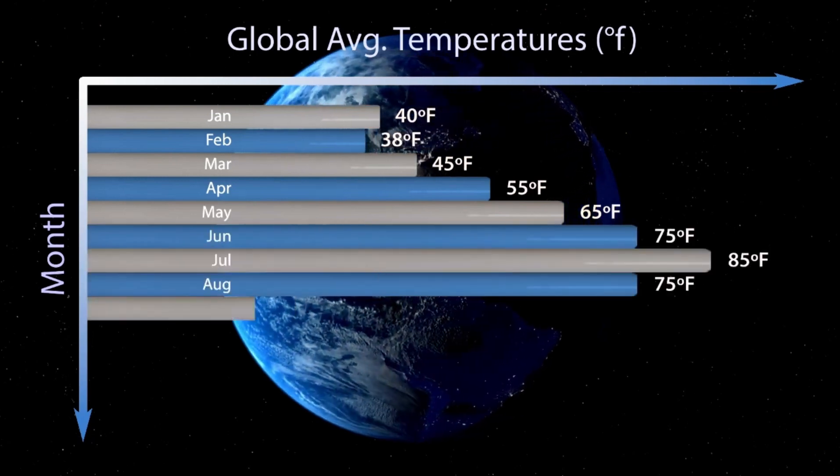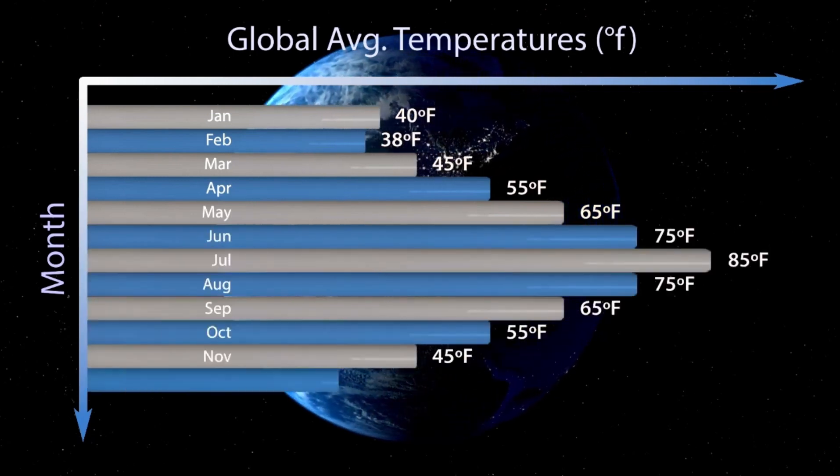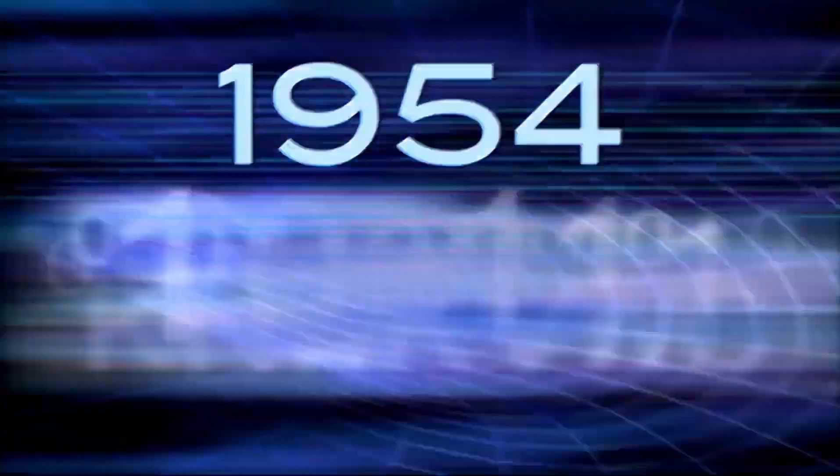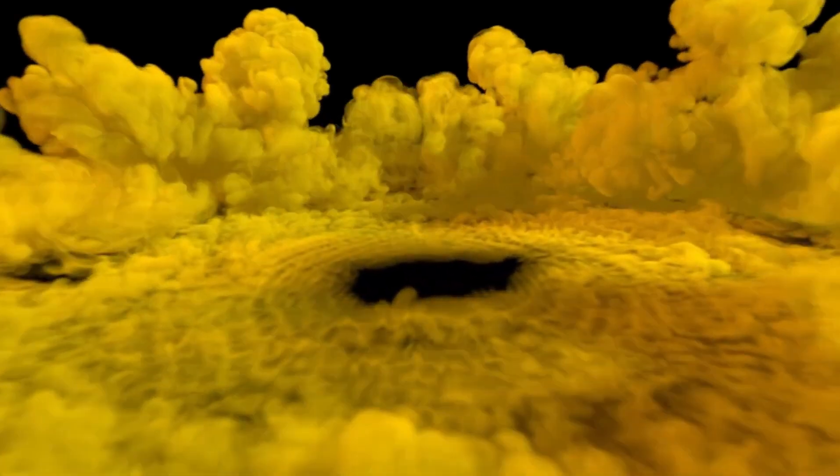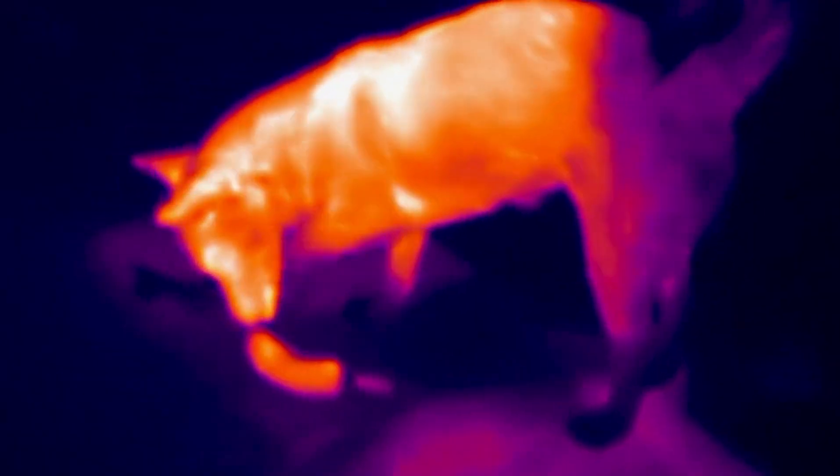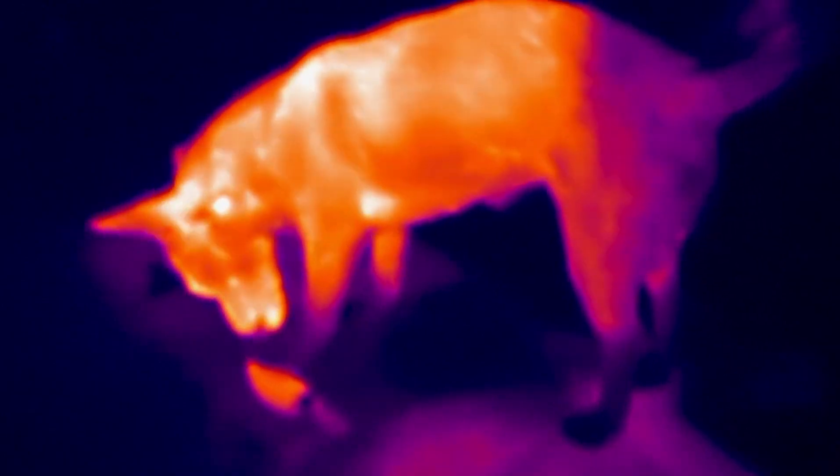New Horizons gave us our first close-up views of Pluto's surface, revealing a surprisingly dynamic and complex world. But it was the James Webb Space Telescope that allowed us to peer deeper, uncovering the mysteries beneath Pluto's icy shell. Webb's incredible infrared capabilities provided a breakthrough, revealing organic molecules and tidal heating, clues to Pluto's hidden potential. This wasn't just a discovery about Pluto. It opened new doors in the search for life across the cosmos.